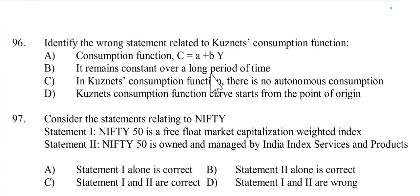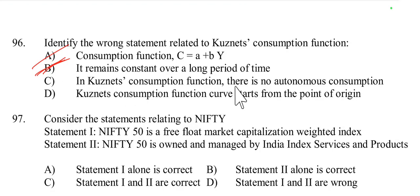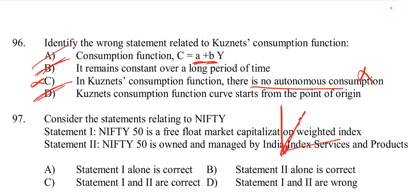Question number 96: Identify the wrong statement related to Kuznets' consumption function. The consumption function is C = a + bY, where a is autonomous consumption and b is MPC. It remains constant over a long period. The incorrect statement is C — that there is no autonomous consumption in Kuznets' function — because autonomous consumption (a) is present. Kuznets' consumption function curve starts from the origin. So A, B, D are true and only C is incorrect; option C is right.